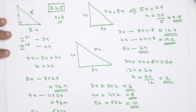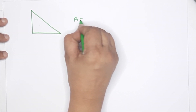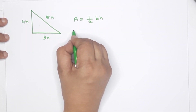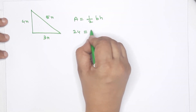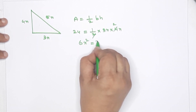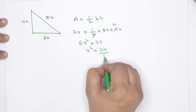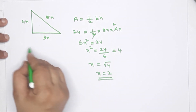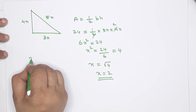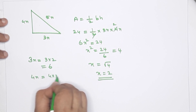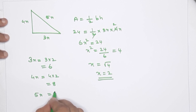Fourth question: the area is 24 square meters. Area equals half base into height. With sides 3x and 4x: half of 3x into 4x equals 6x squared equals 24. So x squared equals 4, x equals root 4, x equals 2. Therefore 3x equals 6, 4x equals 8, 5x equals 10.